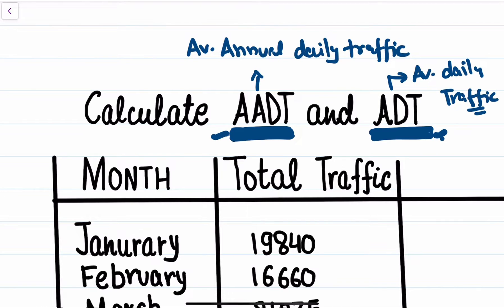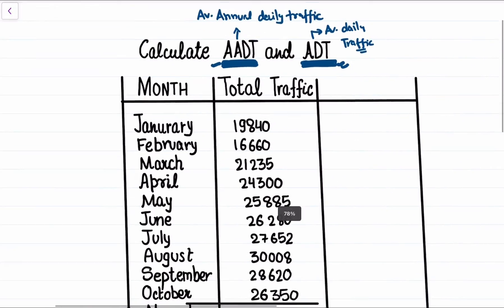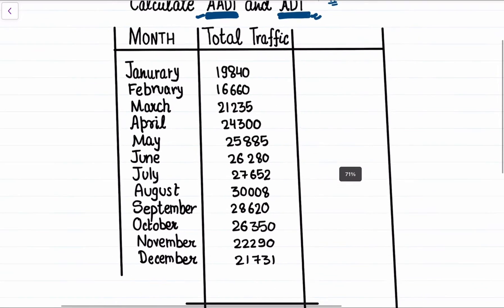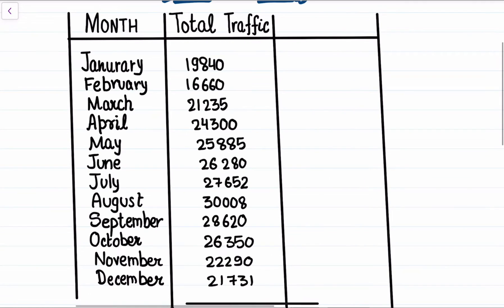Let's say you have done a traffic study for one full year. The data is represented as per the table shown here, where we have months starting from January to December, and in front of each month we have the total traffic volume in PCU that was recorded. These are the respective traffic volumes recorded in each respective month — this is the data we have after completing our traffic volume study.